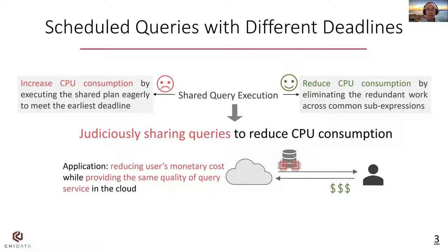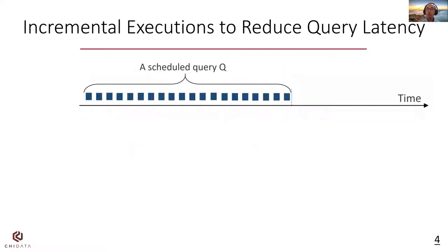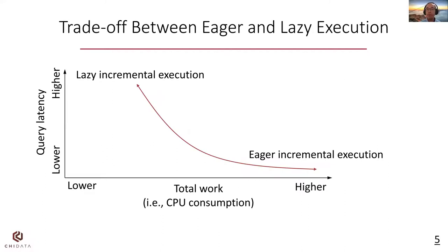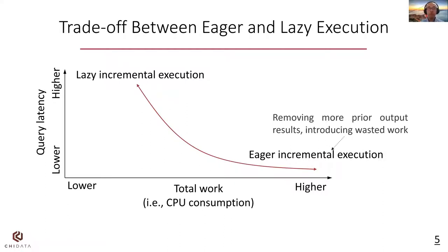Now let me explain why shared query execution can increase the CPU consumption. We represent the deadline of a query as a latency goal, defined as the max allowed time between when all data arrives and when the query result is returned to users. One way to reduce the query latency and meet the latency goal is to use incremental execution, where we start the query early and incrementally incorporate new data into prior results. We can execute this query more eagerly to further reduce the query latency, which means we will start every execution for a smaller amount of data. However, eager incremental execution can increase the total work and CPU consumption, although it decreases the query latency.